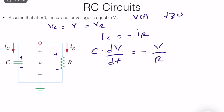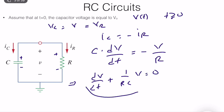IC equals minus V divided by R. So we can rewrite everything: dV/dt plus one over RC times V equals zero. This is the first-order differential equation, and it should be very easy to solve.